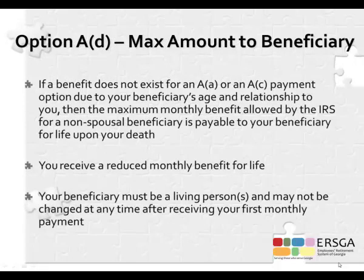Option AD is available to retirees who have named a non-spousal beneficiary that is 10 or more years younger than the retiree — a situation where Option AA or AC may not be available. Option AD allows the retirement system to calculate the maximum monthly benefit available for the beneficiary, who will receive that amount as a lifetime payment upon the retiree's death.